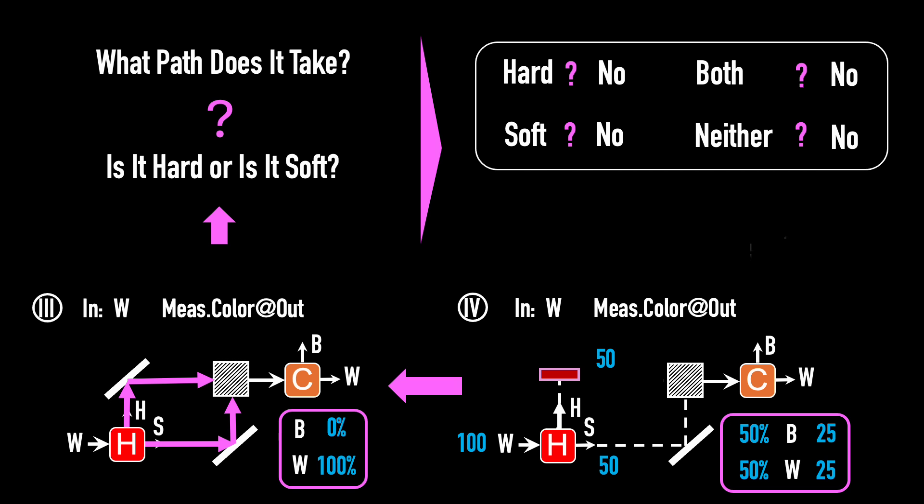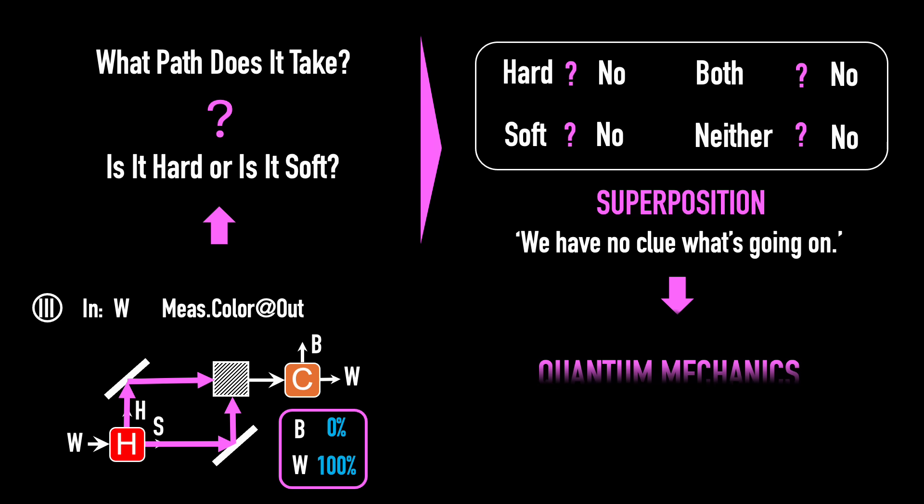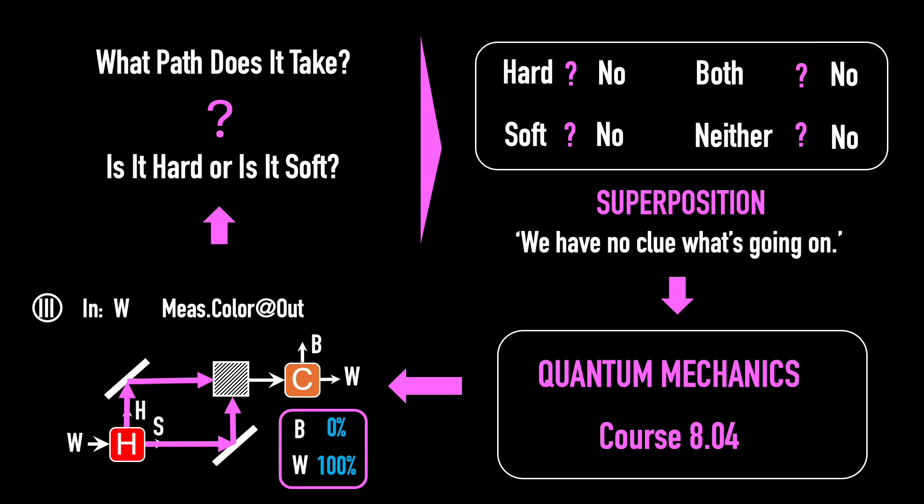Physicists call these modes superposition, which for now essentially means we have no clue what's really going on. To move beyond calling superposition just we have no clue what's going on, we need a new language, the language of quantum mechanics. Its foundations will be the subject of 8.04. No matter how we describe it, superposition is really weird, but it's true. That's the end of Video Lecture 1. Thank you for watching.